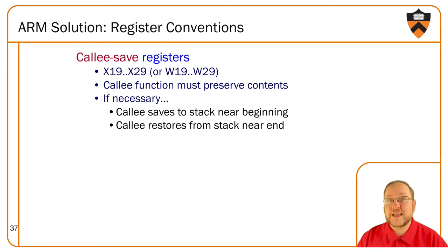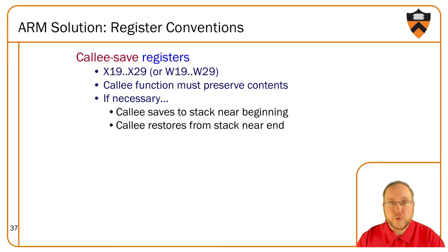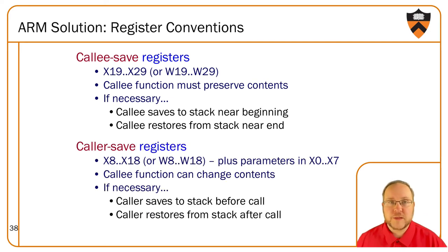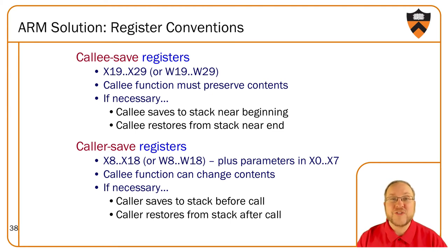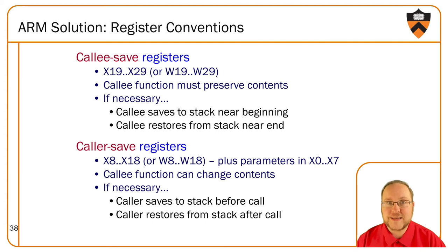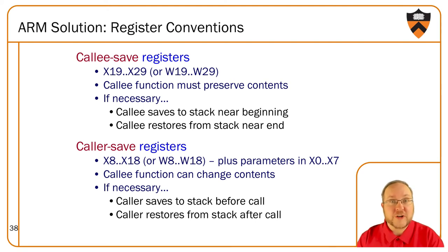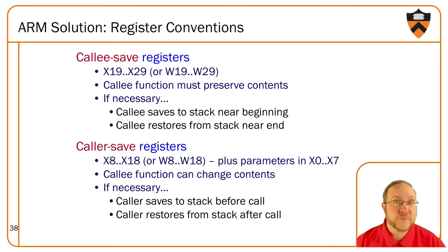Using callee saved registers is always a tradeoff: you have to save and restore once, but then you get to use it as much as you want in between without worrying about other functions. Callee saved registers — X19 through X29 — have to be saved by the callee in order to be used. The opposite side is caller saved — X0 through X18. If I'm calling a function, I have no guarantees the function won't corrupt my values in these registers.